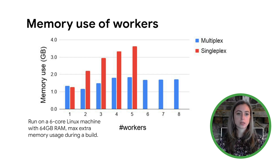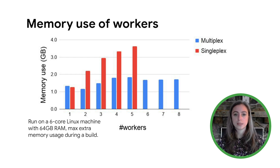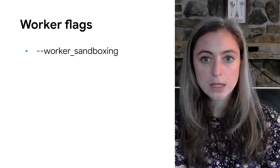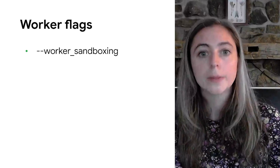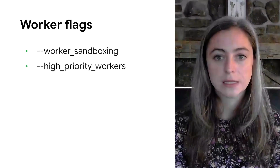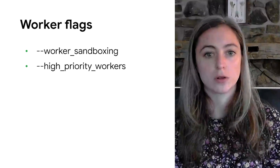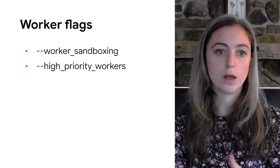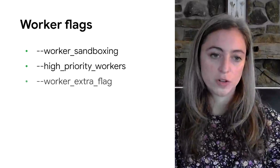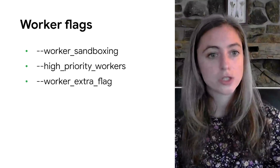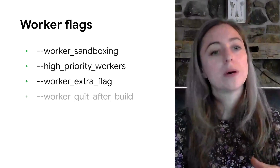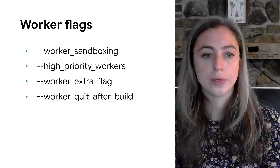The blue bars, which are the multiplex workers, don't show that memory problem. But if you do want to tune the number of multiplex workers, you can set them with experimental_worker_max_multiplex_instances, which is quite a mouthful. A few other flags that affect the behavior of workers: Lars will tell you more about what sandboxing is, but you can toggle that behavior with the worker_sandboxing flag. High-priority workers takes a list of mnemonics that are high-priority — maybe because those actions are on the critical path — and Bazel will prioritize those actions while throttling actions of other types. Worker_extra_flag allows you to pass an arbitrary list of flags to all of your workers. Quit after build is what you would expect.